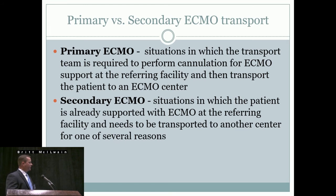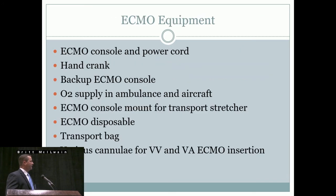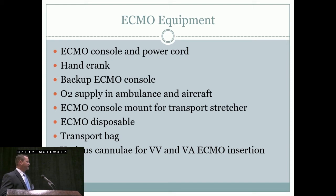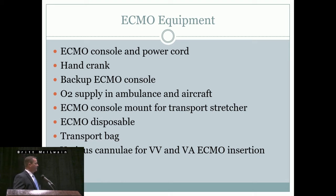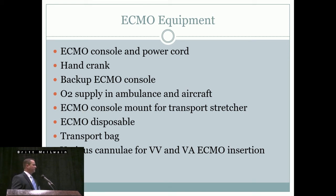Secondary ECMO transport involves picking up a patient who is already on ECMO and transporting them to your center — most of the time for bridge to transplant. Equipment needed includes your console, power cord, hand crank, backup console, O2 supply for both the ambulance and aircraft, mounts, disposables, transport bags with clamps, fluids, IV tubing, and various items the critical care transport team may not provide. You also need to think about whether to bring VV and VA cannulas, since you may start with one modality and end up needing several.